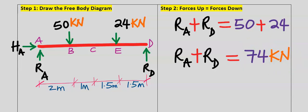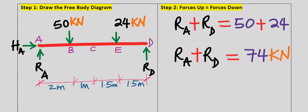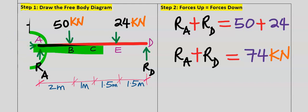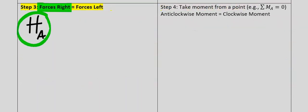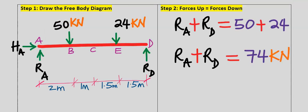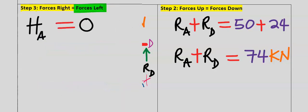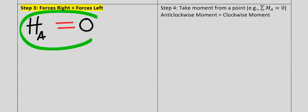In step two we still have two unknown forces. Step three: forces pointing to the right equal forces pointing to the left. From the free body diagram, the horizontal force at point A is pointing to the right, and no force is pointing to the left — it is zero. Therefore the horizontal reaction at A equals zero, and we have obtained one result.